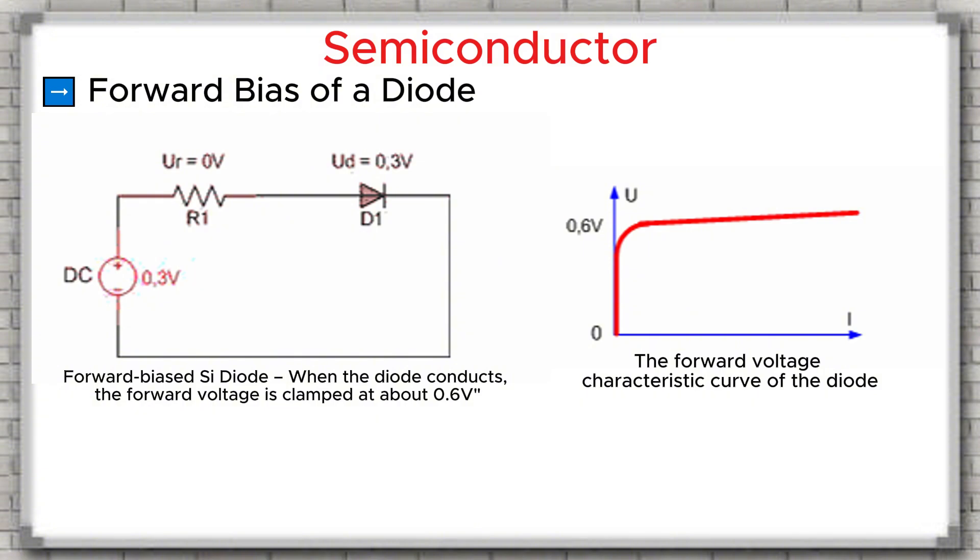Conclusion. When a silicon diode is forward biased, the forward voltage drop stays nearly fixed at 0.6 volts. If the forward voltage is less than 0.6 volts, no current flows through the diode. Once the forward voltage reaches about 0.6 volts, current begins to flow. After that, as the current increases, the forward voltage drop stays nearly fixed at 0.6 volts.